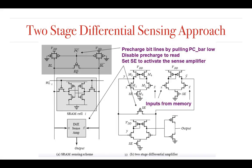We are going to the two-stage differential sensing approach, which means we are using two different stages. In the initial stage, we have two differential amplifiers using the same inputs: x and x bar, which are the bit lines and bit bar lines from memory. The outputs of these two differential amplifiers are given as input to another differential amplifier — this is stage one and stage two. The output of the second stage differential amplifier is connected to another inverter. The PC bar signal is used to pre-charge the bit as well as bit bar lines. If PC bar is low, the EQ PMOS transistor will turn on and BL as well as BL bar lines will be pre-charged to VDD.